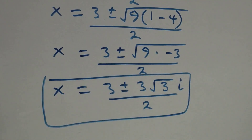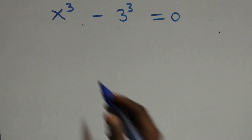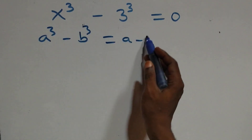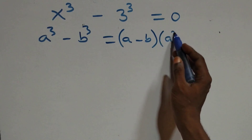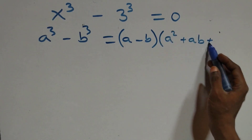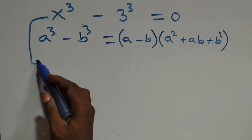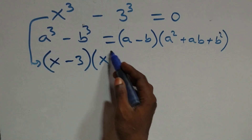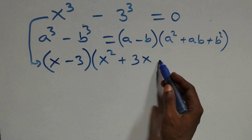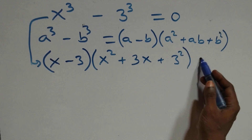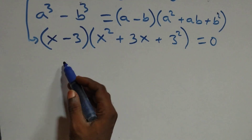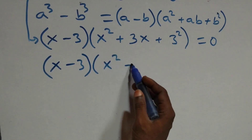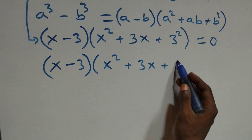Solving from the second case, this follows the difference of cubes identity: a³ − b³ is the same as (a − b)(a² + ab + b²). Here this becomes (x − 3) times open bracket x squared plus 3x plus 3 squared, equals to 0. Which implies (x − 3)(x² + 3x + 9) equals to 0.